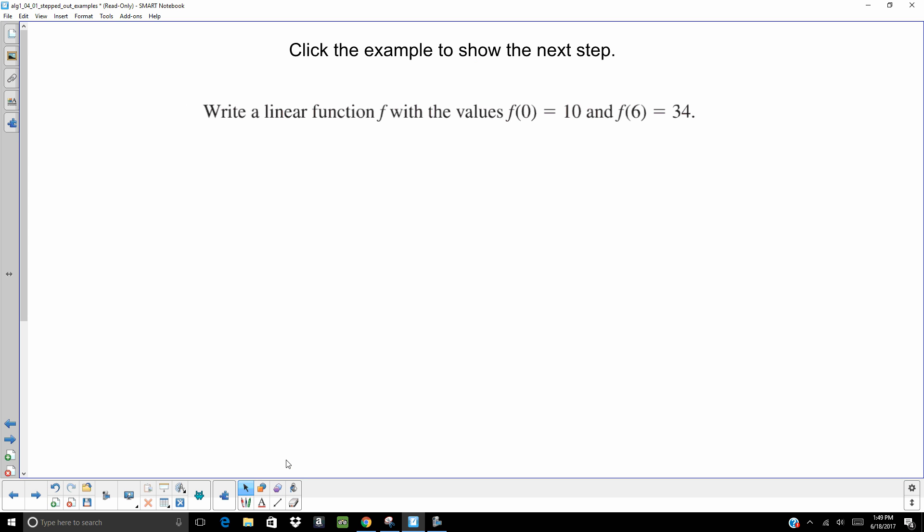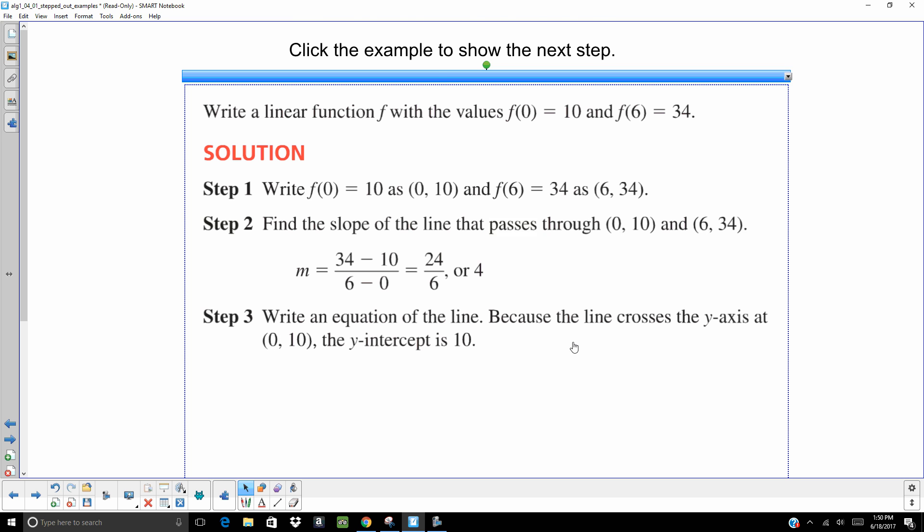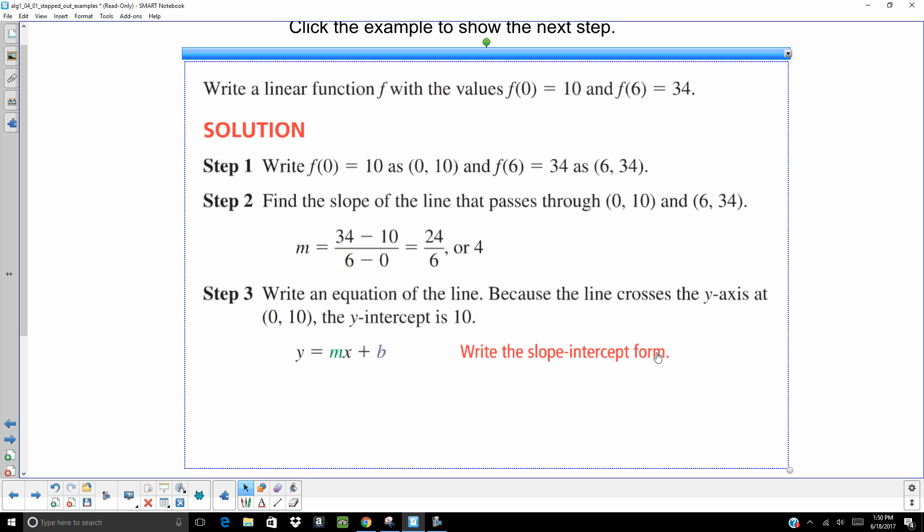All right. They're giving it to us in function notation. And this looks like it's going to be a tough piece of cake. Function notation, you can rewrite that as an ordered pair. Your input is 0, your output is 10. That's an ordered pair, 0, 10. Your input is 6, your output is 34. That's an ordered pair, 6, 34. So, let's go ahead. Find the slope. 34 minus 10 over 6 minus 0, and you get 4. They're also telling us our y-intercept is 10. So, now we've got all the important information. We can write this as an equation. Y equals 4x plus 10. And then we can change that, take out that y and give it as a function notation, f of x.